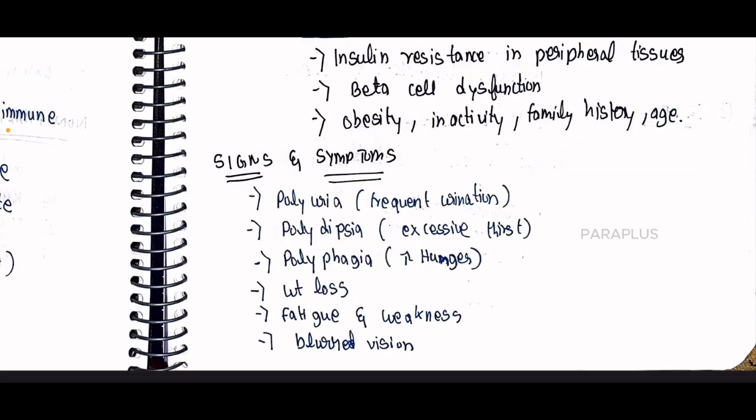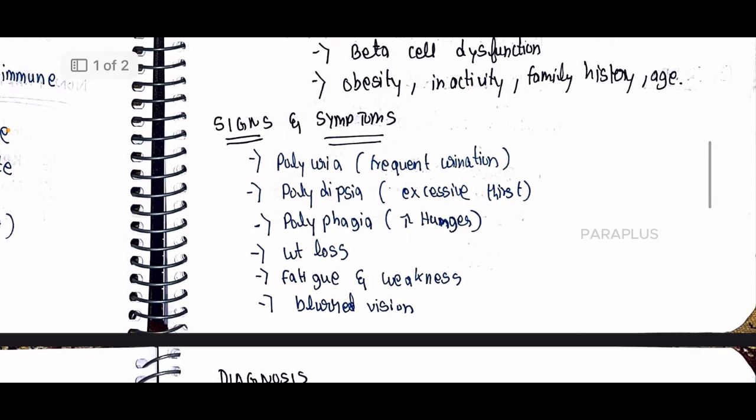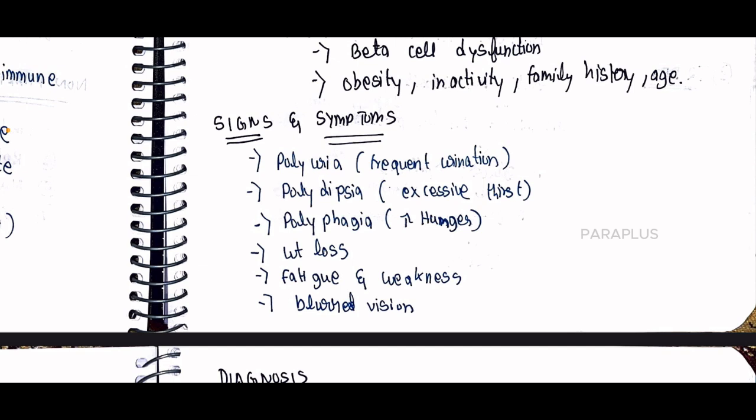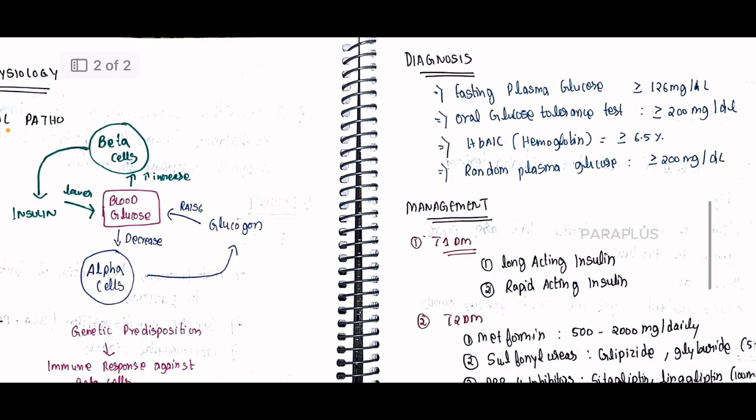Signs and symptoms include polyuria — frequent urination, such as 3 to 4 times more than normal. Polydipsia — excessive thirst. Polyphagia — excessive hunger. Weight loss in patients, fatigue, patient feeling weak, and blurred vision. Blurred vision is affected by nerve damage, which is a chronic complication of diabetes.